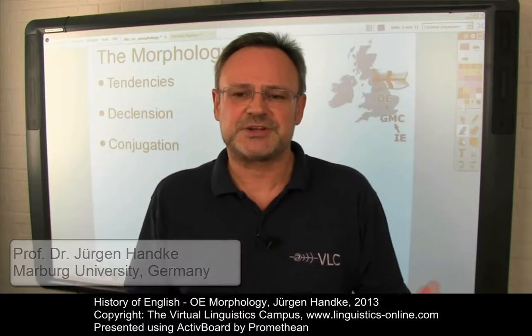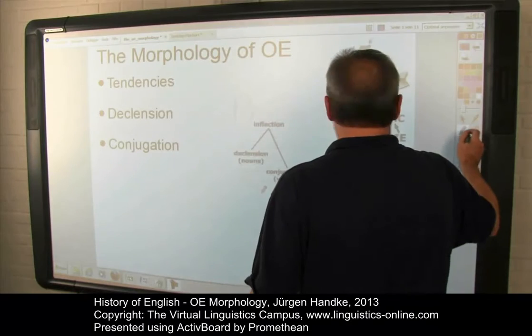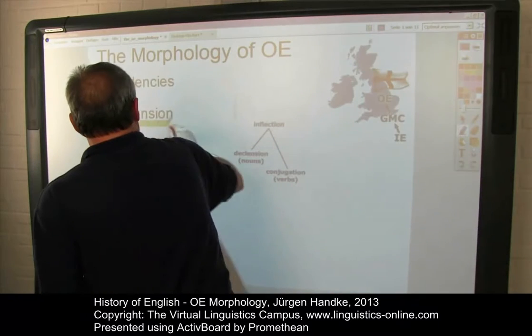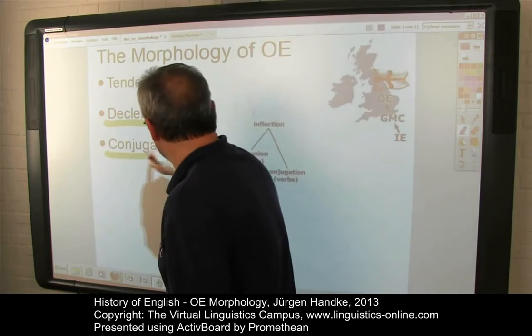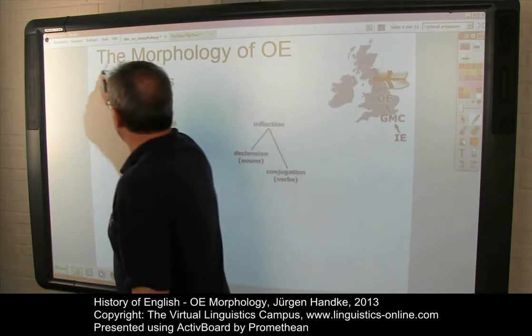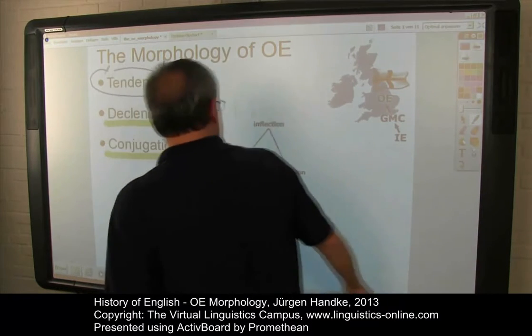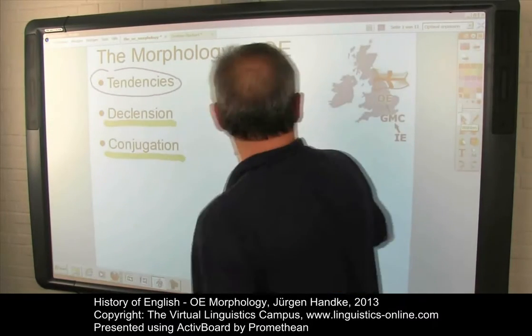Old English was more synthetic than present-day English. Its inflectional system was in many ways more elaborate. In this e-lecture, the central aspects of Old English inflection will be discussed. We will look at the declension of nouns, adjectives, pronouns and determiners. We will deal with the conjugation of verbs, but prior to that, we will discuss some general tendencies of Old English morphology and beyond that were already underway.